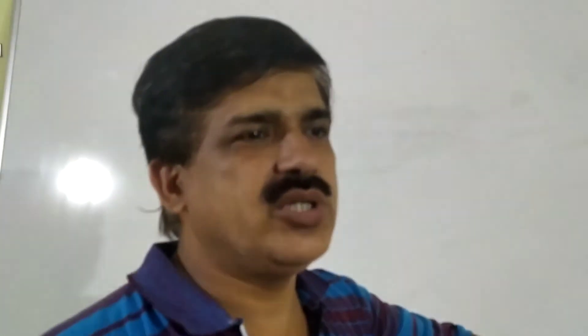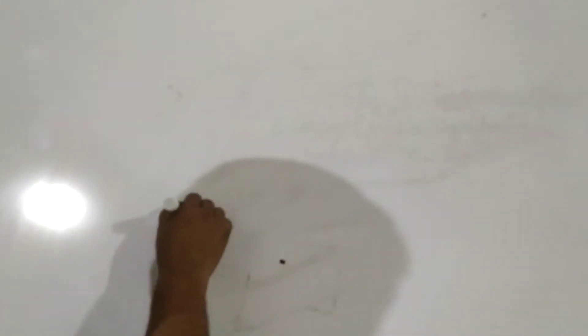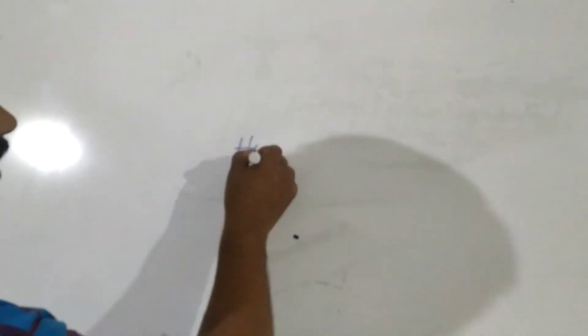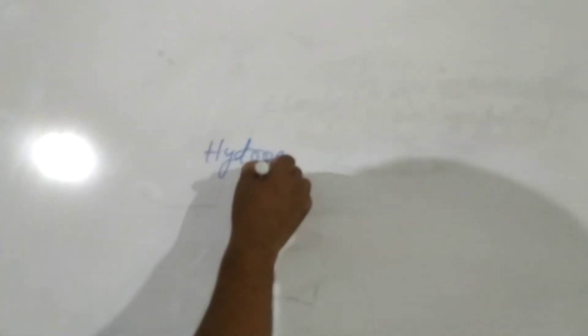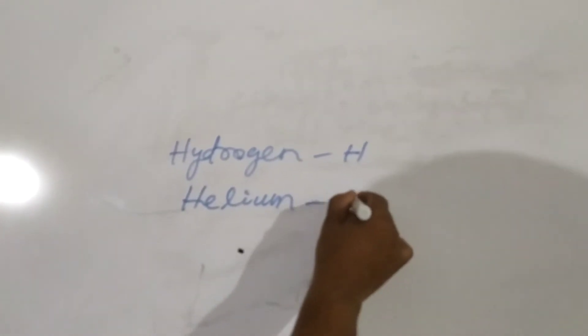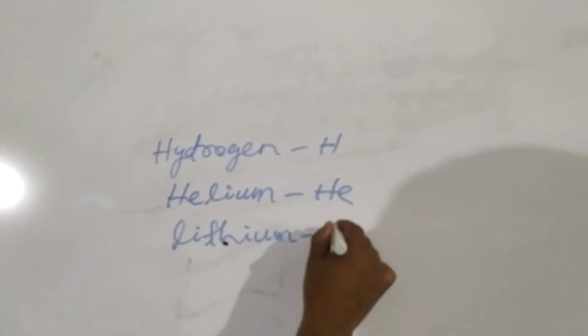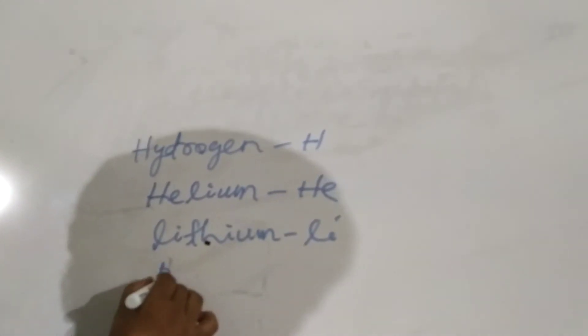We should remember the first 30 elements and its symbols. We should memorize it. First element is hydrogen, hydrogen, helium, lithium, beryllium.